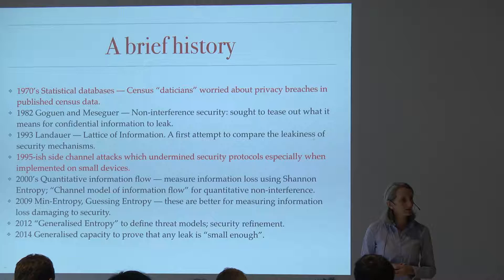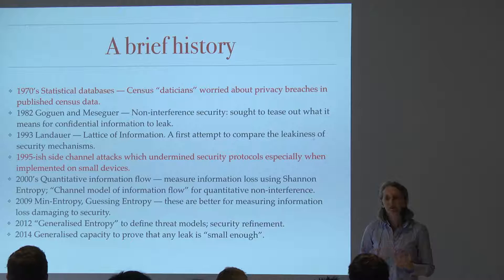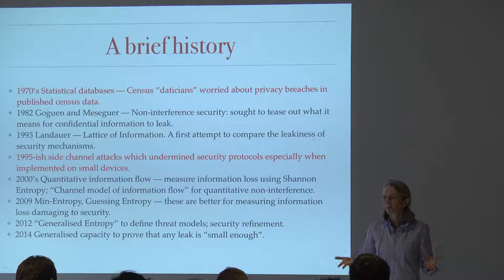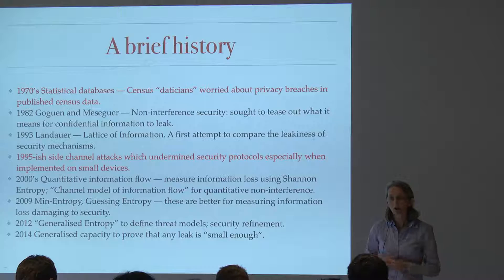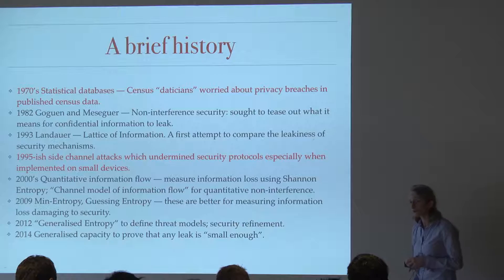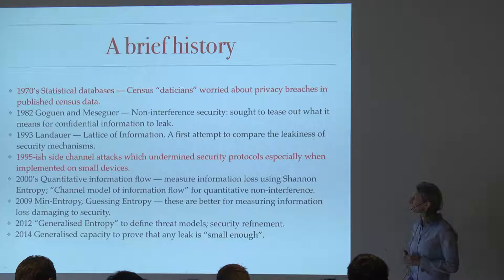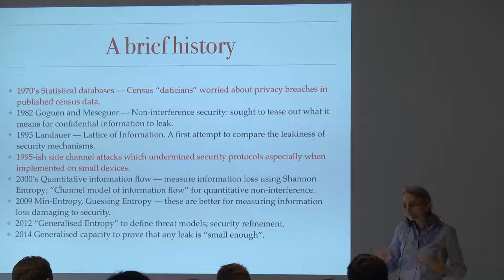What they were trying to do was model and reason about systems where there was some secret information. They split states into two parts: high-level information which was the secret, and low-level information which was not secret. They imagined that an observer of the system would be able to make inferences about the secret just by observing the program behavior and the low-level state. They formalized this idea of non-interference: a system was non-interference secure if none of those observations could tell you anything about the secret. But it turned out to be too severe to really be useful for systems with secret data.